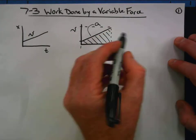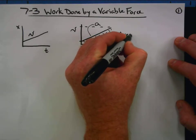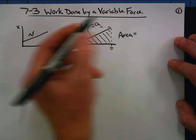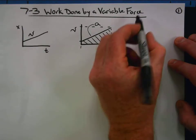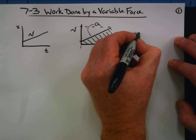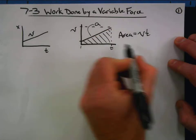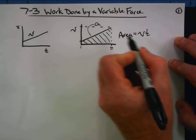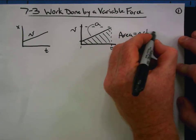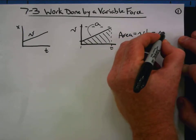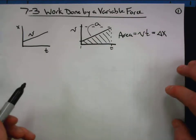When we look at this area, we're looking at the velocity dimension and the time dimension. We multiply those together to find an area — velocity times time gives you a displacement or a change in position. That's what we're doing.